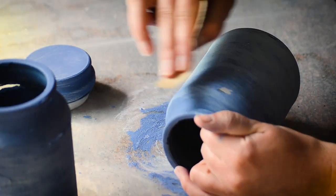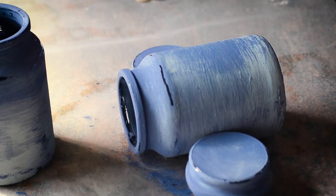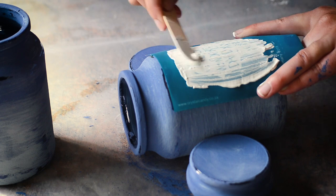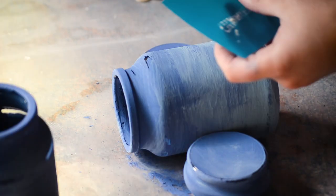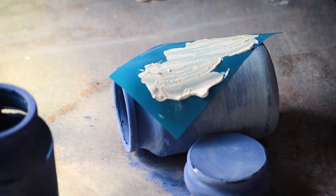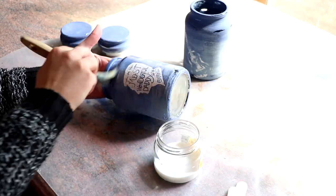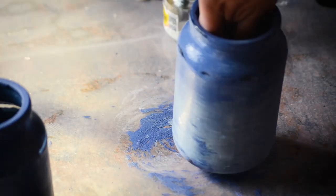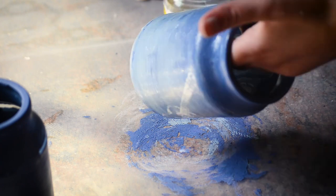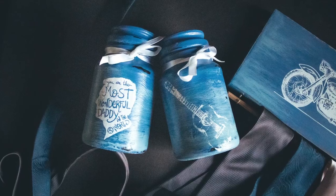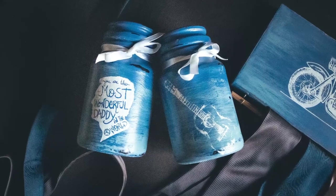Place your mesh stencil onto the jar and stencil using a lighter paint color so it stands out. I chose a different stencil design for my second jar. Let the paint dry and then seal over everything using varnish seal. I sealed my jars twice. Now you can fill them with all sorts of goodness for dad.